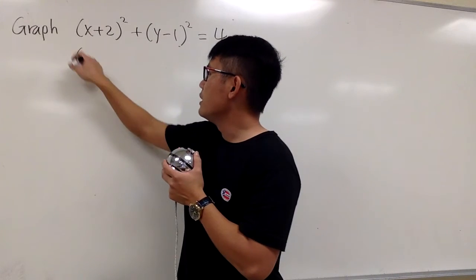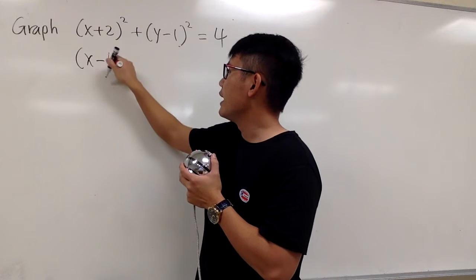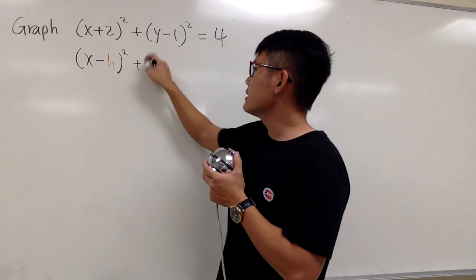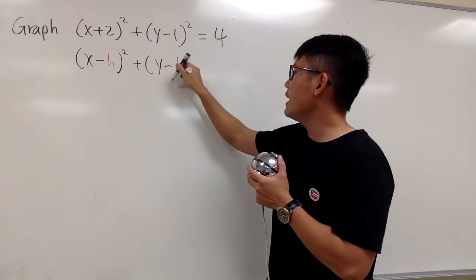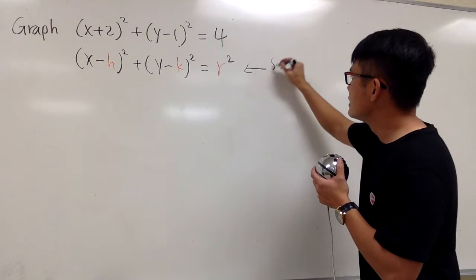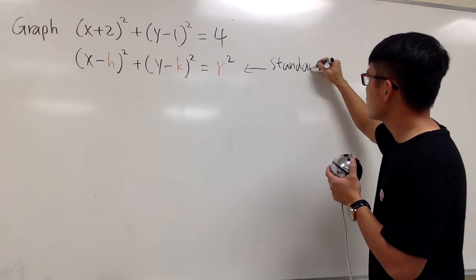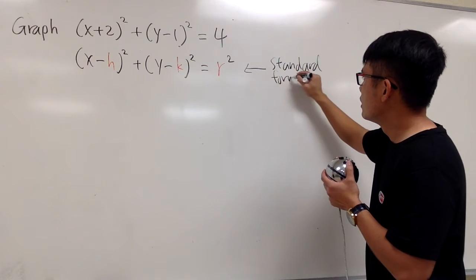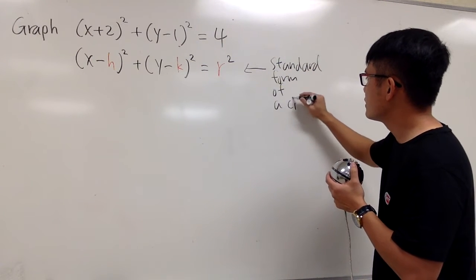So let me remind you guys, the form is going to be (x minus h) squared plus (y minus k) squared is equal to r squared. This is the standard form of a circle.